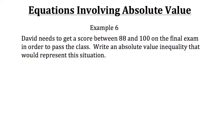Alright, let's take a look at example 6. We have a student David who needs to get a score between 88 and 100 on the final exam in order to pass the class. Write an absolute value inequality that would represent this situation. Before we get to David's score, let's look at a small example that could give us some insight on how to do this.